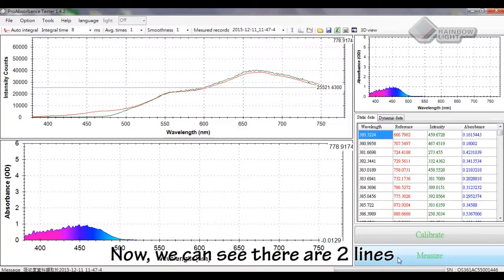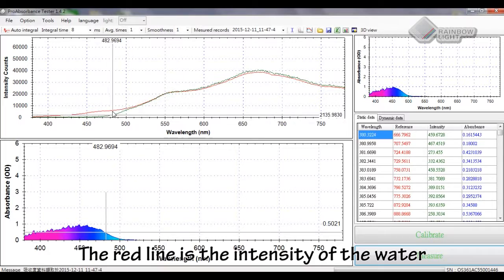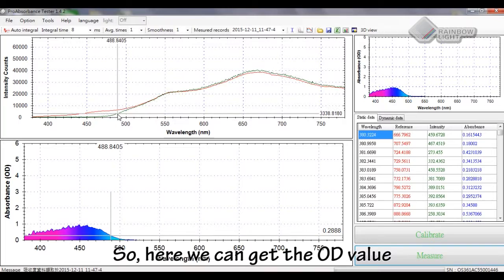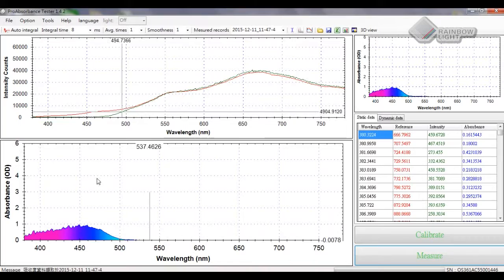Now we can see there are two lines. The red line is the intensity of the water, which is the reference. And the green line is the intensity of yellow ink. So here we can get the absorbance value and the spectrum of absorbance.